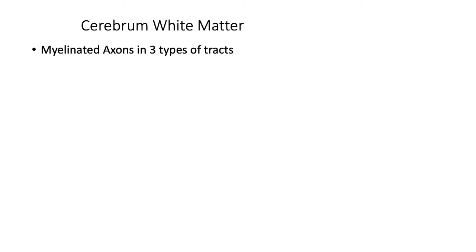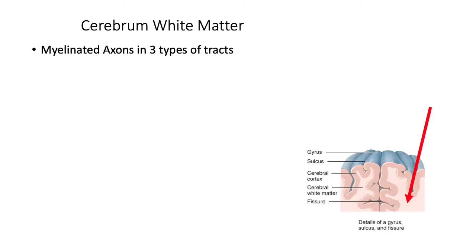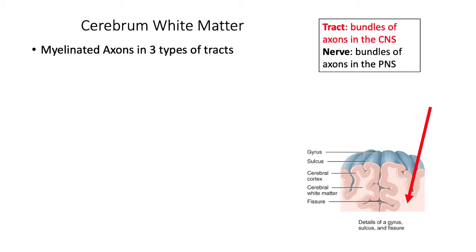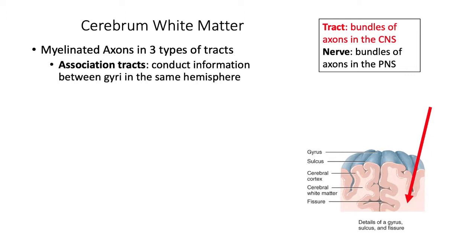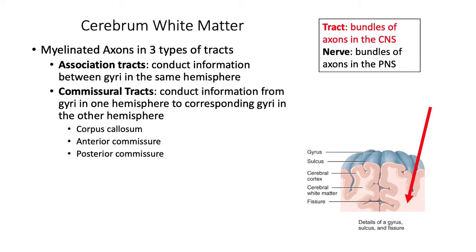The white matter of the Cerebrum lays under the cortex. You can think of it as the middle area of a brain sandwich, as it has gray matter superficial to it and another layer of gray matter deep. This area contains myelinated axons that run in three different types of tracts. Remember that a tract is a bundle of axons in the CNS. Association tracts carry axons within the same hemisphere — they don't cross over to the other side. Commissural tracts carry axons from the cerebral cortex on one side to the cerebral cortex in the other hemisphere, crossing over from one side to the other. An example of a commissural tract we have already learned about is the corpus callosum.